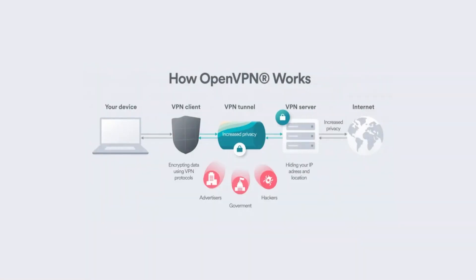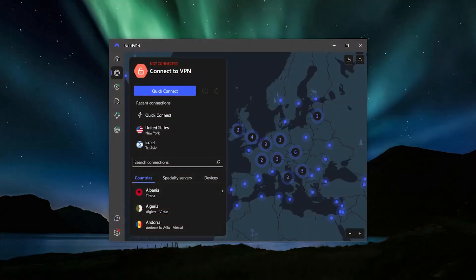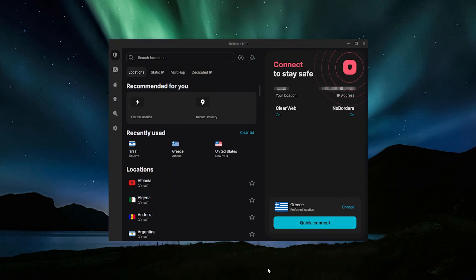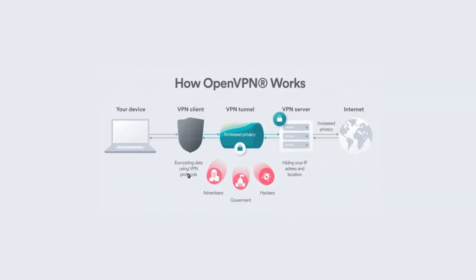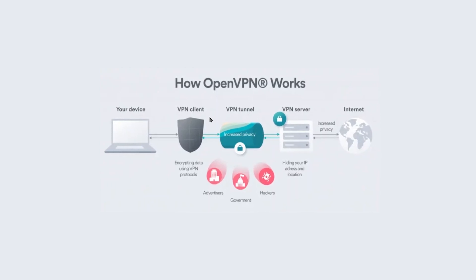Here's an illustration of how this works: you have your computer, you have your VPN client — whether it's something like ExpressVPN, NordVPN, or Surfshark. Those are the three VPNs I'll be discussing in this video. Your VPN client is going to create something called a VPN tunnel using the protocol, whether it's OpenVPN or WireGuard, and all of your data is going to go through that tunnel and become encrypted.